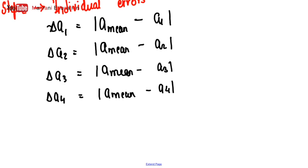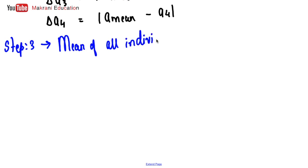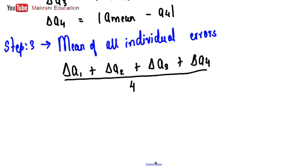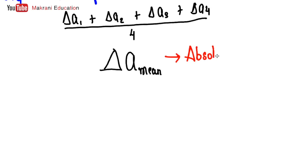Step 3 is to find out the mean of all individual errors. That is: (delta_A1 plus delta_A2 plus delta_A3 plus delta_A4) divided by 4. The answer at the end of this step is called delta_A_mean, and this is nothing but your absolute error.